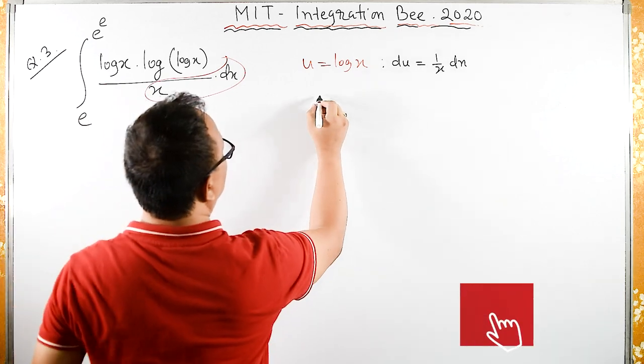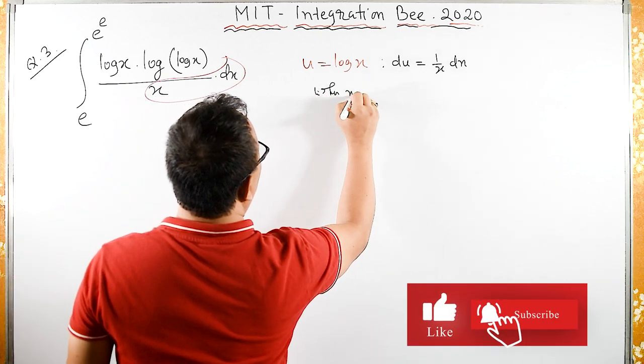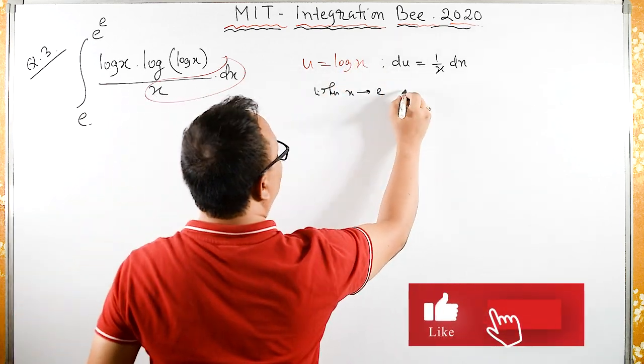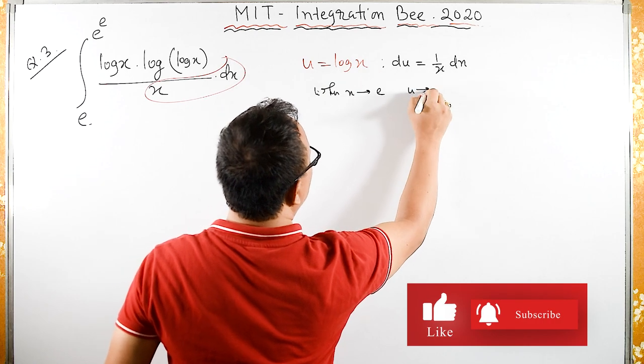Let's change the limits. When x equals e, log e equals 1. Therefore, u equals 1.